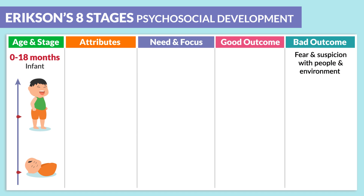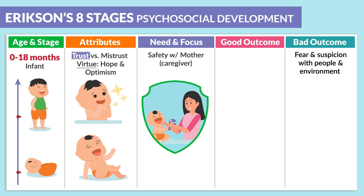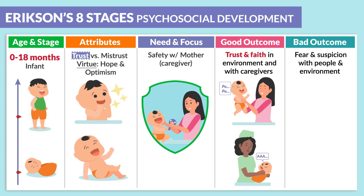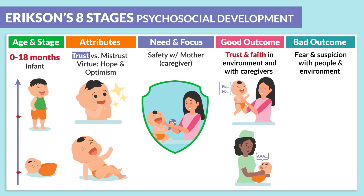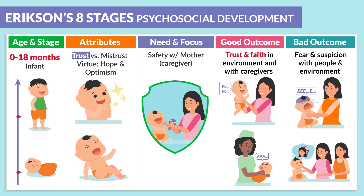0 to 18 months — this is considered the infant stage. The attributes are trust versus mistrust, as mentioned by Hesse. The virtue is hope and optimism, and the need and focus is safety with the mother, or basically the caregiver. The good outcome is trust and faith in the environment and with the caregivers. The bad outcome is fear and suspicion with people and the environment.